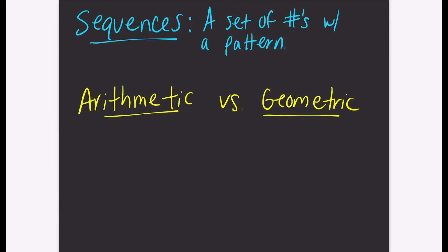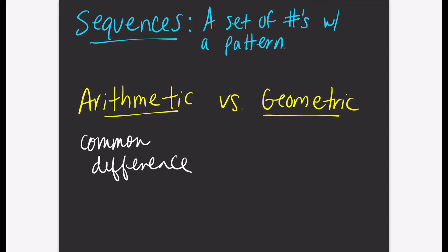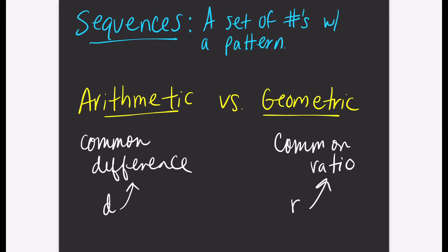The arithmetic sequence has what's called a common difference, and a geometric sequence has what's called a common ratio. The symbol for common difference we will use is D, so D is equal to the common difference. And R will represent our common ratio.